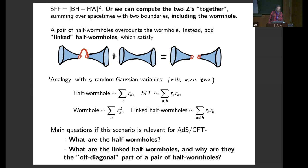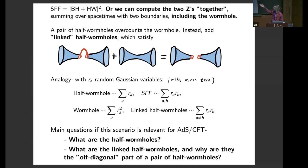It's useful to keep in mind an analogy where we think about the half wormhole as a sum over a bunch of random variables r. The spectral form factor is then this factorized double sum over two r's. In this analogy, we can think about the wormhole as the diagonal part of this double sum, giving the average of the spectral form factor. The half wormholes are then analogous to the off-diagonal part of this double sum. So if this scenario is relevant for AdS/CFT, our main questions are: what are the half wormholes, what are the linked half wormholes, and why do they behave like the off-diagonal part of a pair?